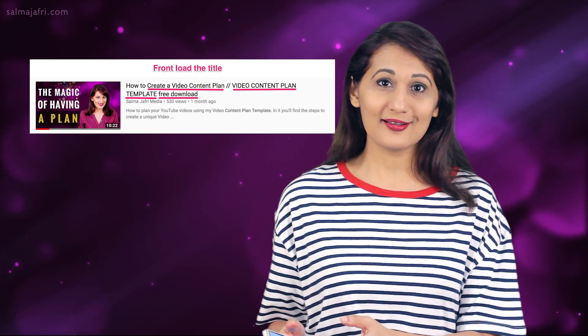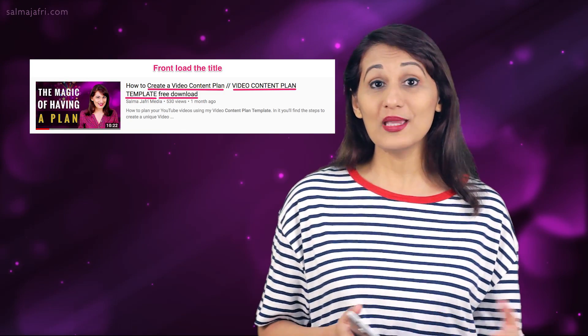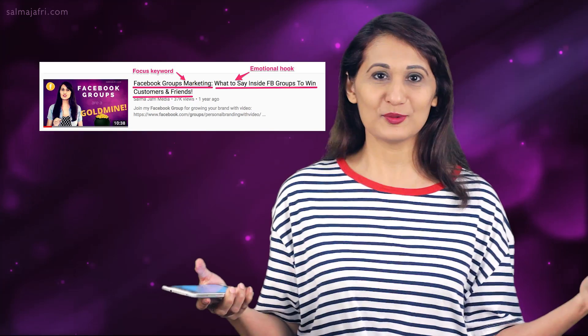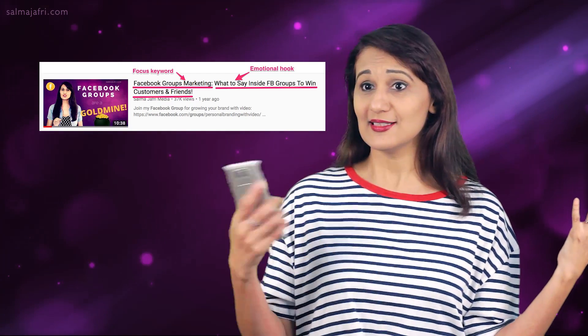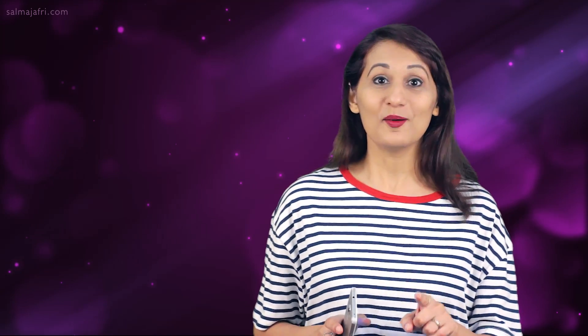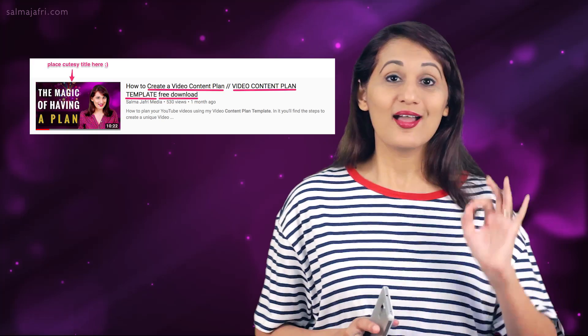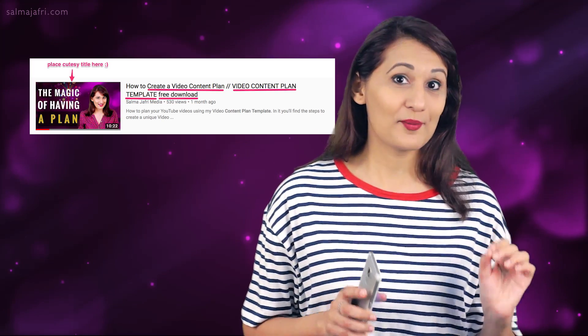For example, you might say 'Facebook groups marketing: what to actually say inside a Facebook group,' or 'Facebook groups marketing: the stuff you didn't know.' You want things for both the algorithm — the keywords — and for humans, which is the emotional context. Also, if you think of something cute, a slang, or a funny phrase, the place for that is not in your video title but in your thumbnail text, where it complements the title.